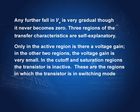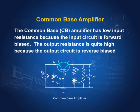Let us now look at the common base amplifier. As I said, the base is common to both input as well as output. This is the circuit: this is the input signal, this is the resistance in the emitter circuit, this is the voltage Vee, this is Vcc, this is RC, and this is the output across the load resistance.